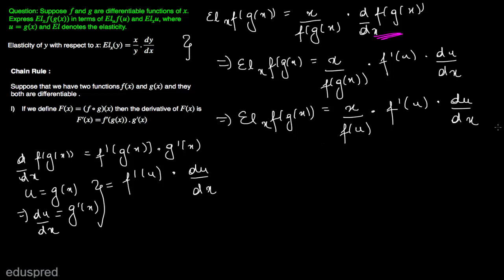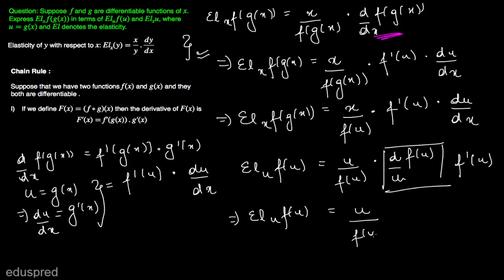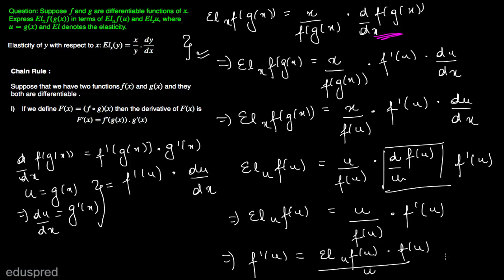We need to express this in terms of elasticity of f(u) with respect to u and elasticity of u with respect to x. The elasticity of f(u) with respect to u, using the definition, is u divided by f(u) multiplied by f prime of u. This implies f prime of u is equal to the elasticity of f(u) with respect to u, multiplied by f(u) divided by u — this is equation number one.